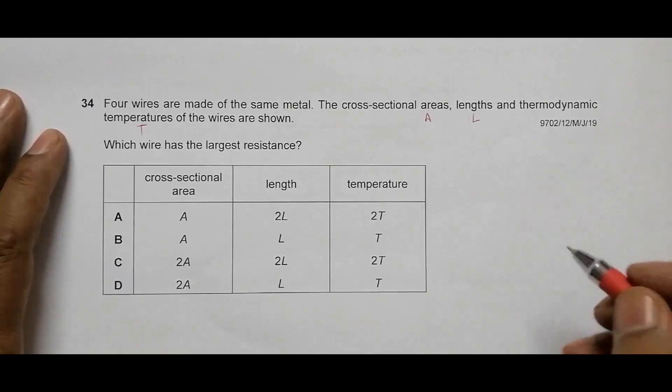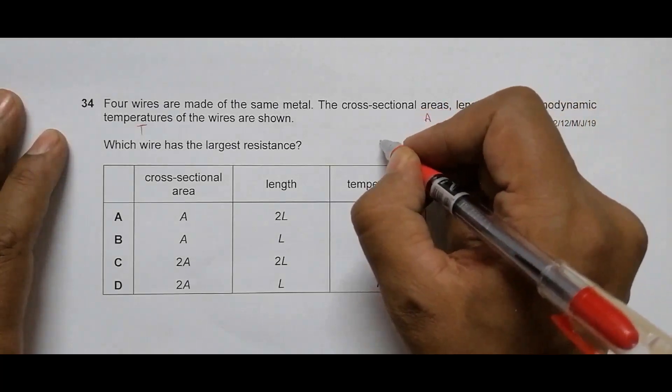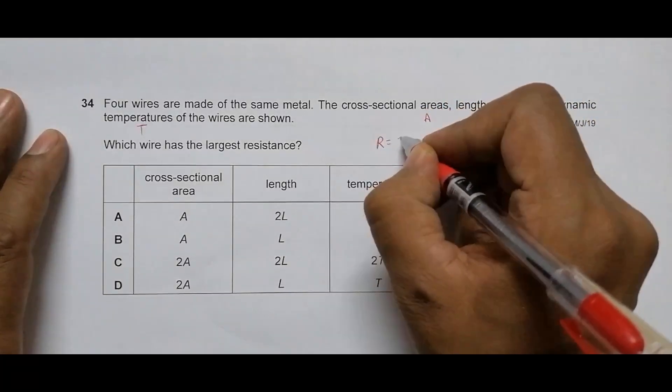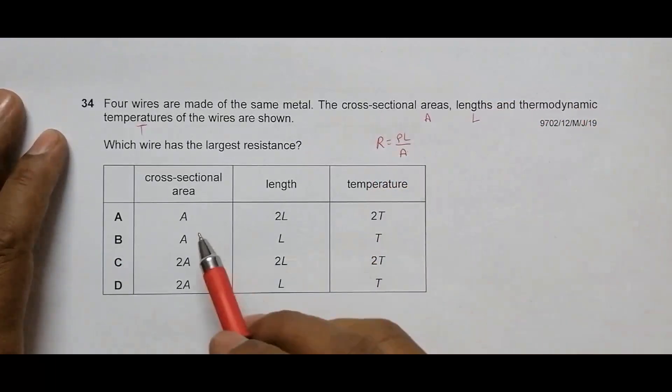Before considering the temperature, let us start with the formula for resistivity: R equals ρL by A. So with that, let us go through each case.